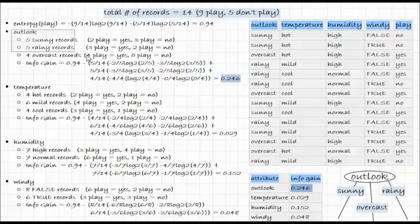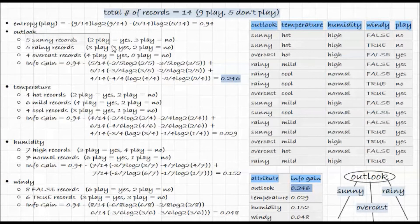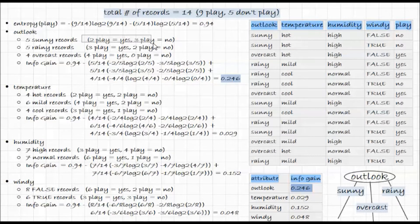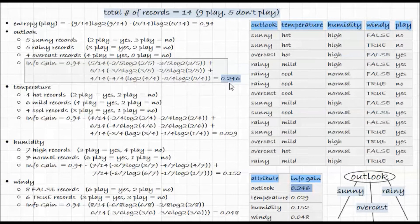For the outlook attribute, there are five records where outlook is sunny, five where it is rainy, and four where it is overcast. Of the sunny records, two have 'play = yes' and three have 'play = no'. For rainy records, three have 'play = yes' and the remaining have 'play = no'. For overcast, all of them have 'play = yes'. Here we calculate the information gain if we were to split on the outlook attribute.